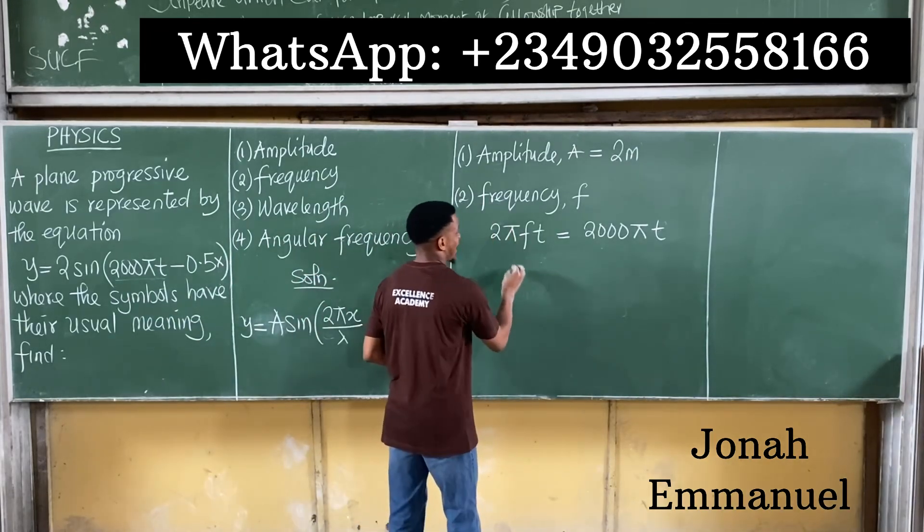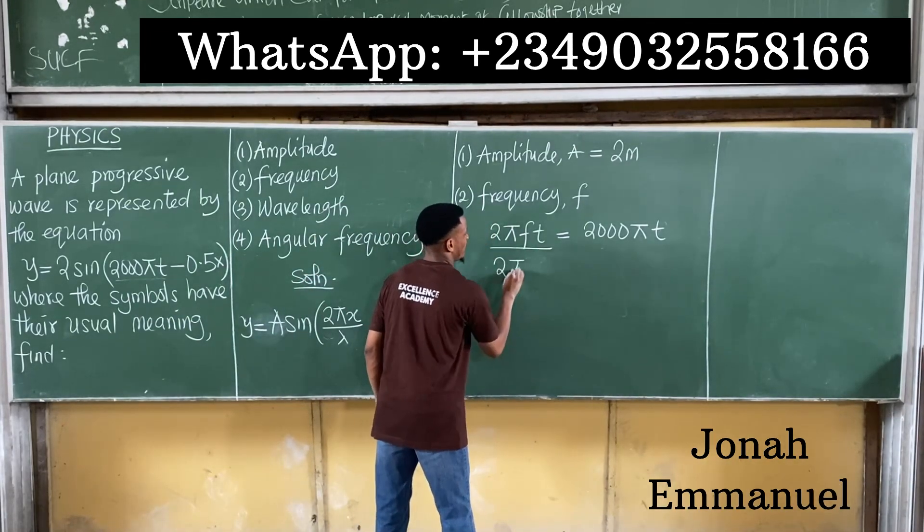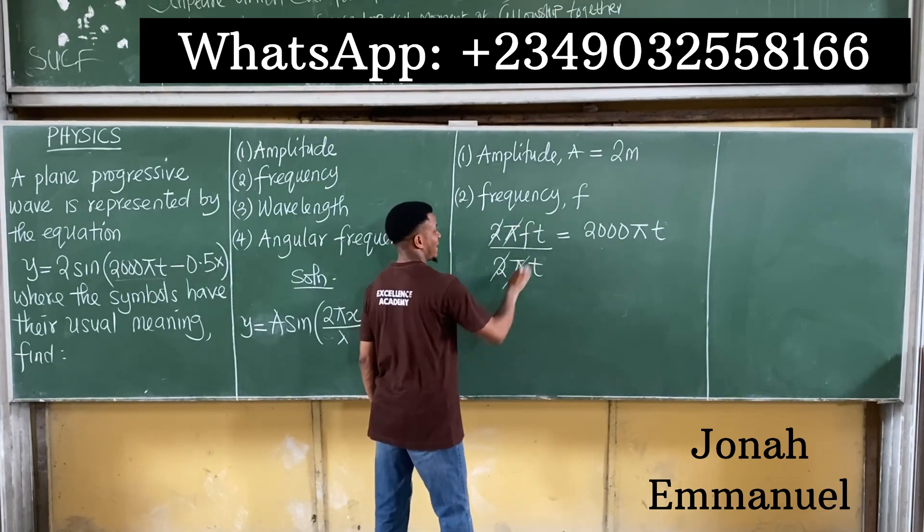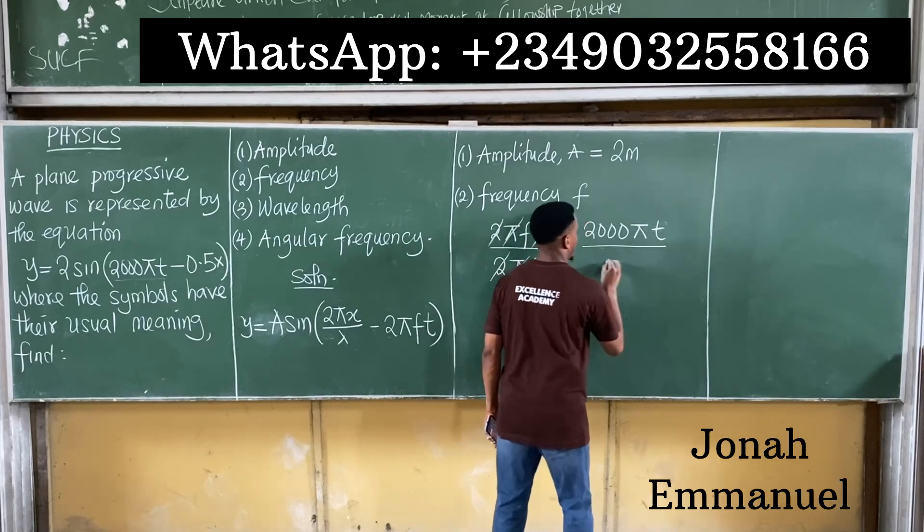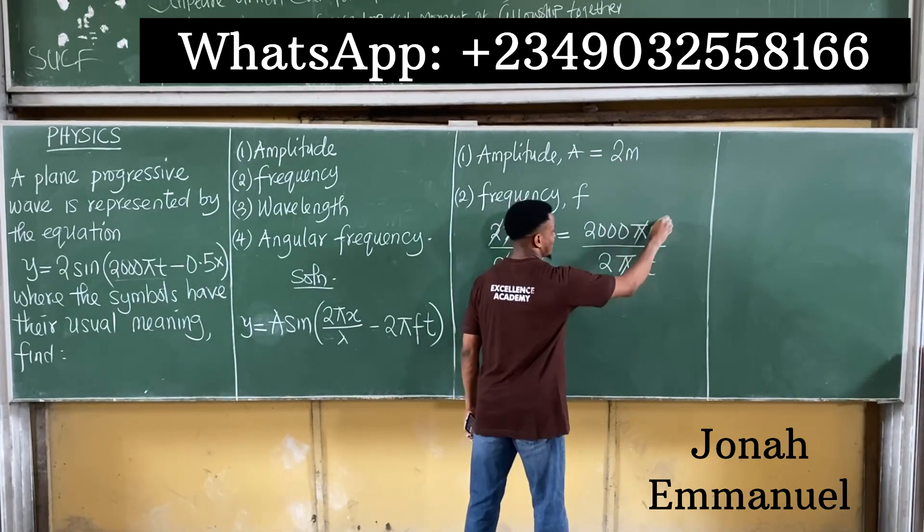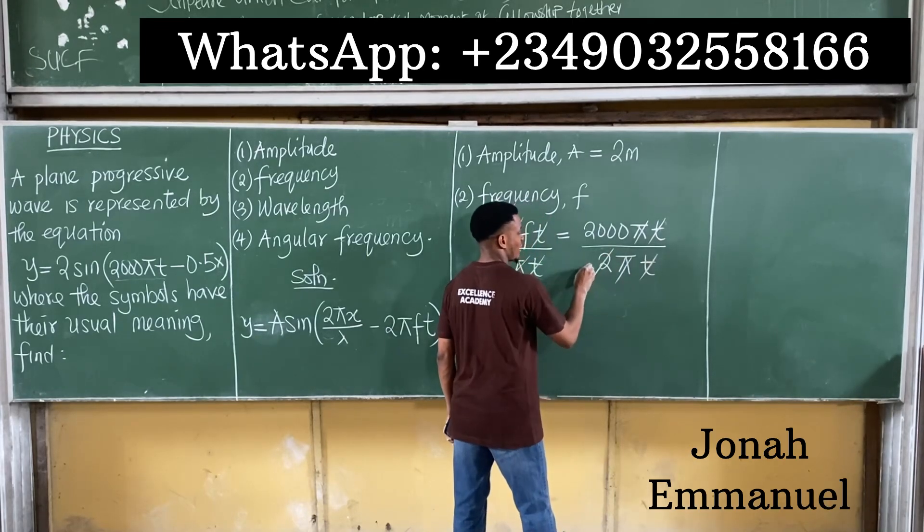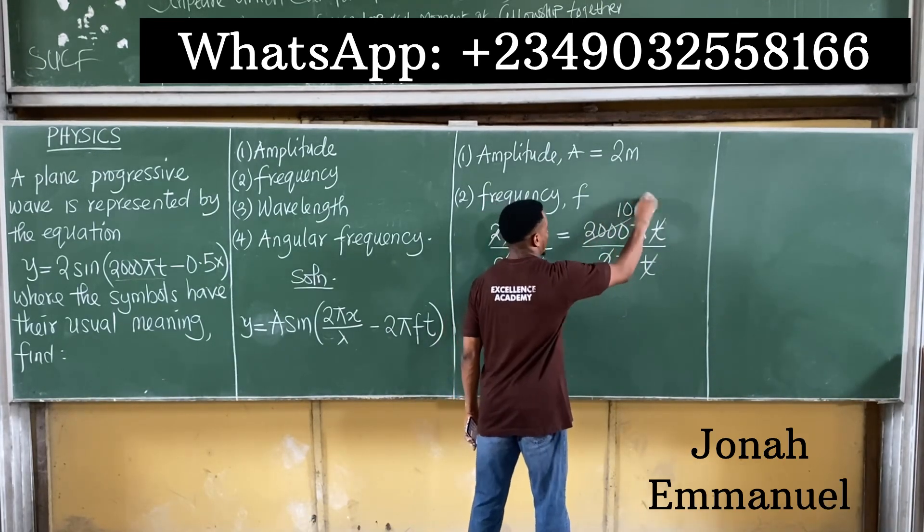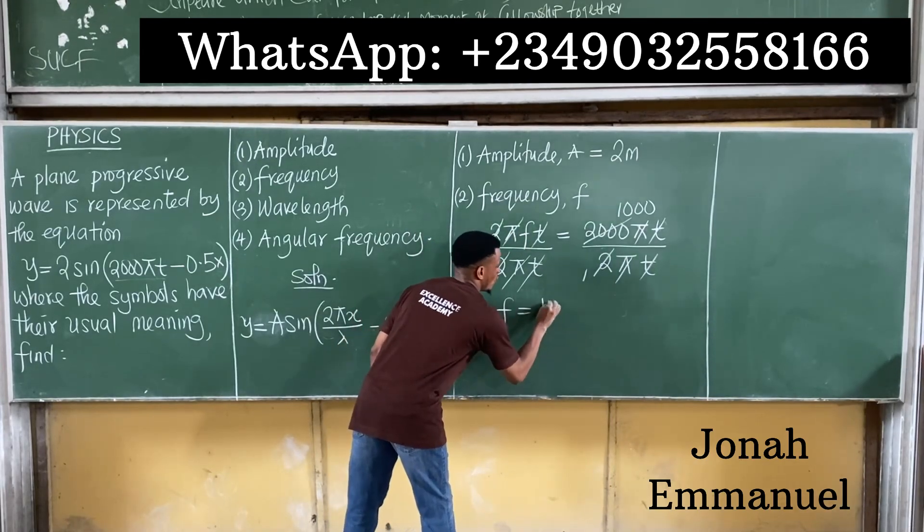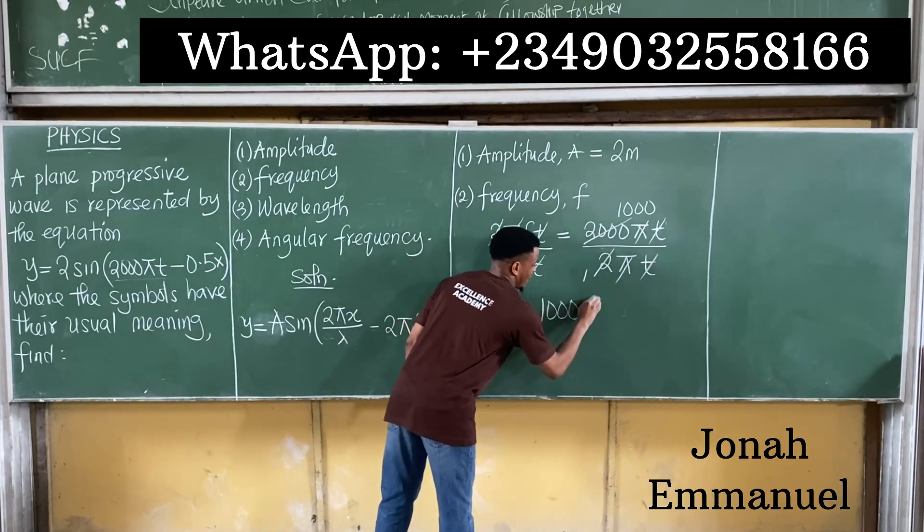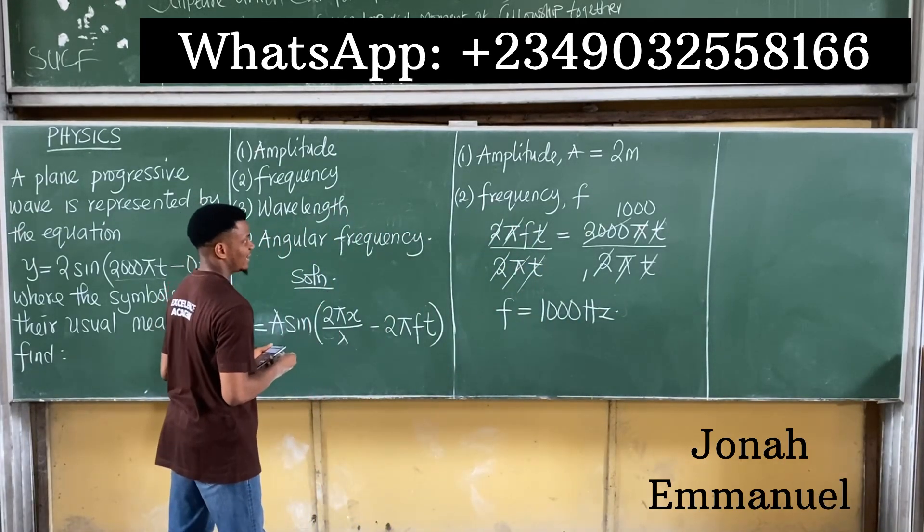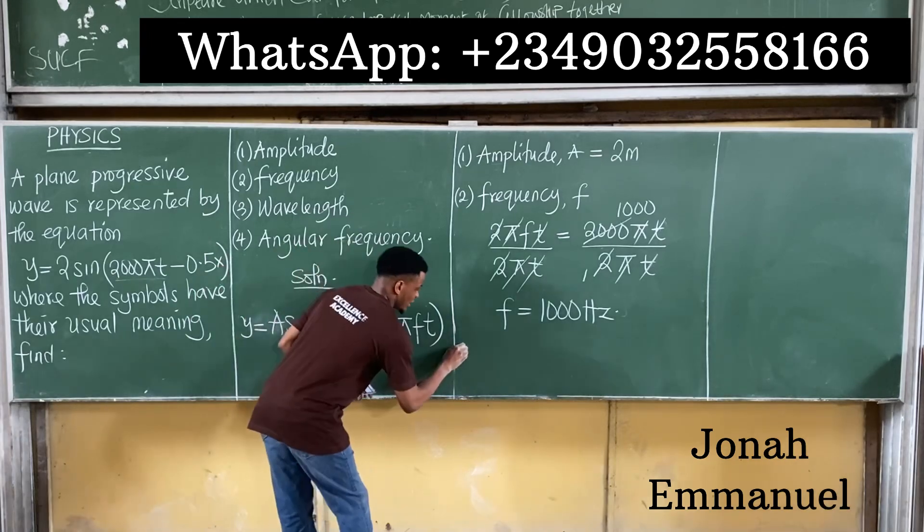To get the value of f, I will divide here by 2πt. So 2 cancels 2, π cancels π, t cancels t. Divide here also by 2πt. So π cancels π, t cancels t, 2 here 1, 2 here 1000. So the frequency f is equal to 1000. Frequency is measured in hertz. I'm having 1000 hertz as my answer.